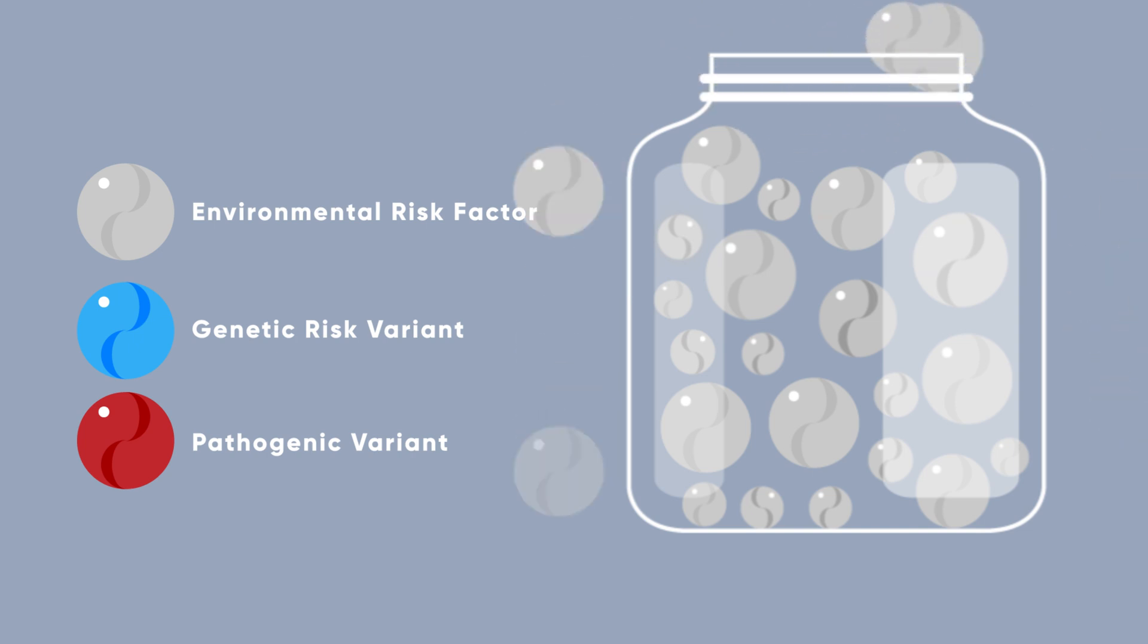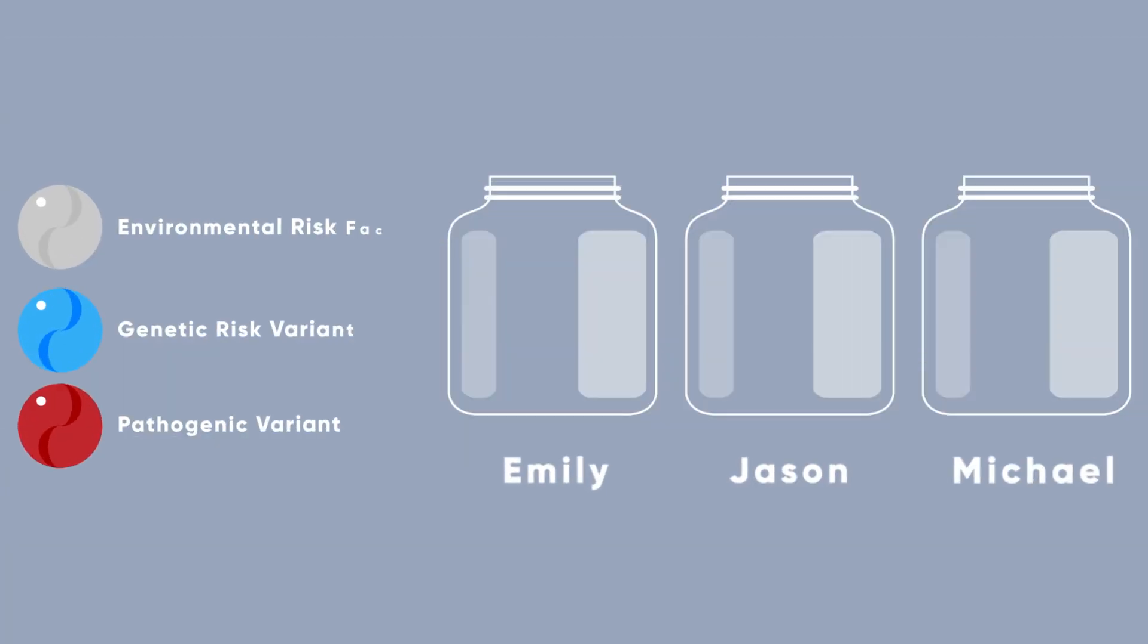When it comes to complex disease, there are three things to consider. The first is the size of a variant's effect or impact.